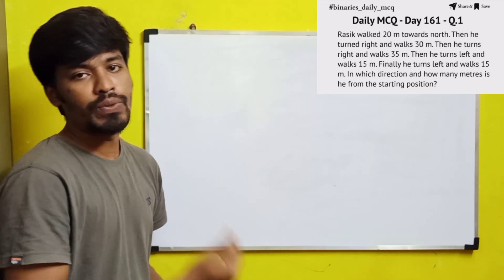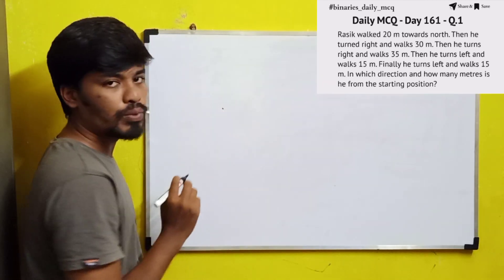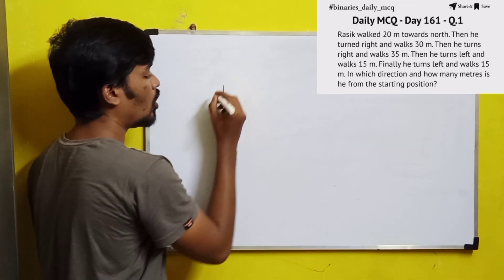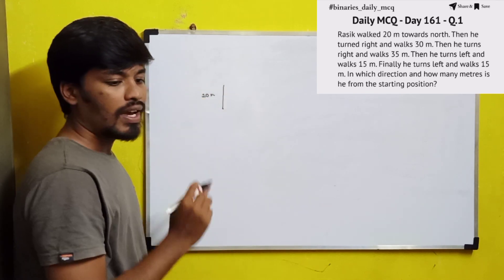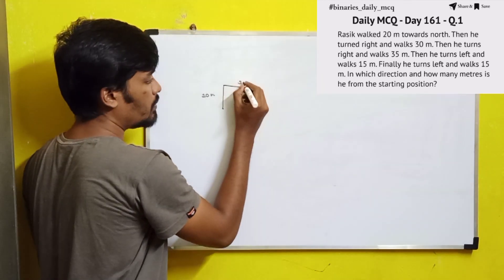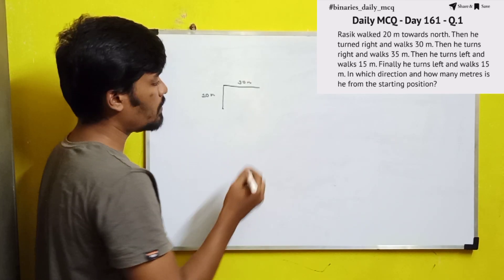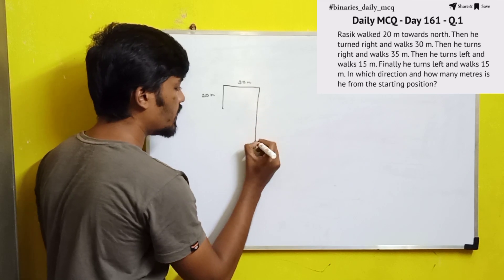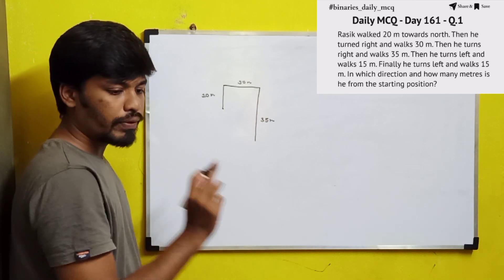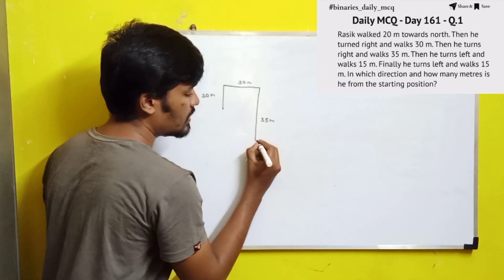We will start marking the direction in which way he has moved. He started moving towards the north, so we take this as the starting position of Rasik. He moved 20 meters towards north, then turned right and walked 30 meters. Then he turned right again and walked 35 meters. Then he turns left — left means this side, because he is facing in this direction — so left will be in this way.